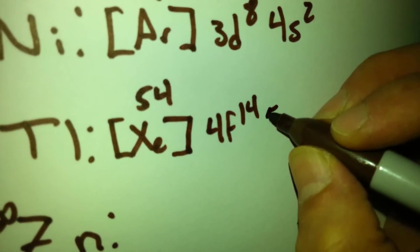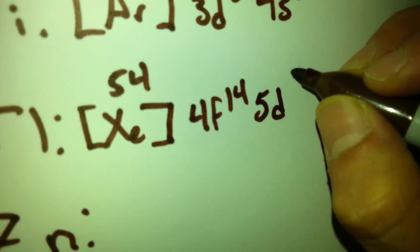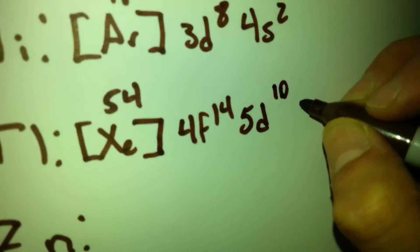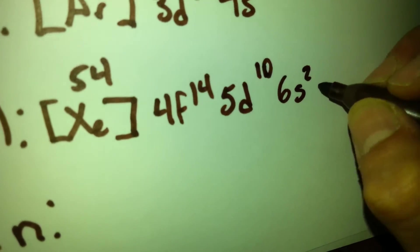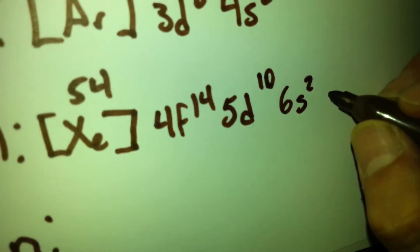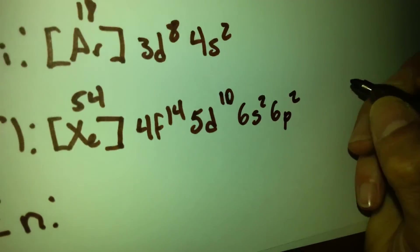Then, the 5d orbital full with 10. After that, we have the 6s orbital full with 2, and then the 6p orbital with only 2.